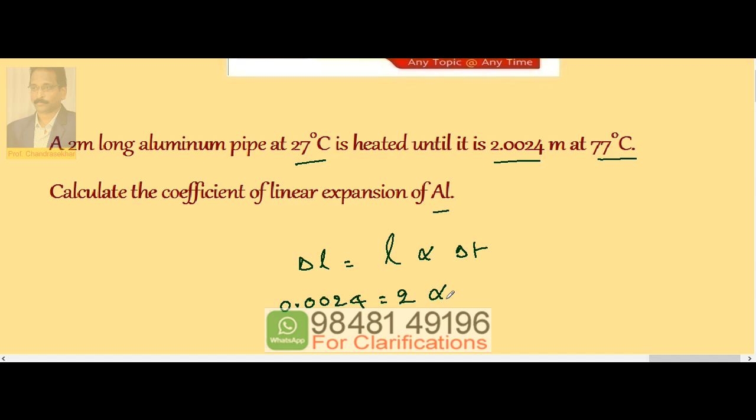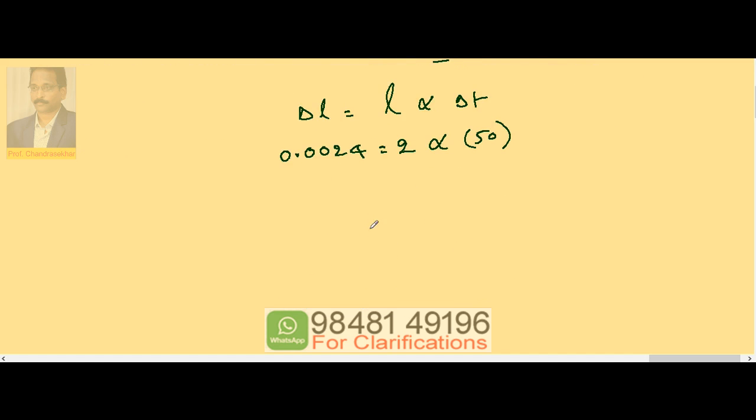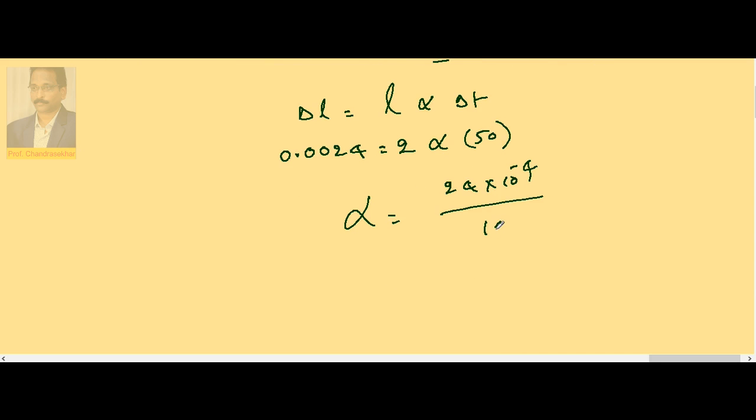This is equal to 2 into alpha into temperature difference, 77 minus 27 is 50. Therefore alpha is equal to this, 24 into 10 to the power of minus 4 divided by 2 into 50 is 100.